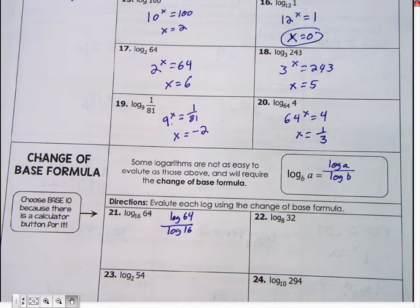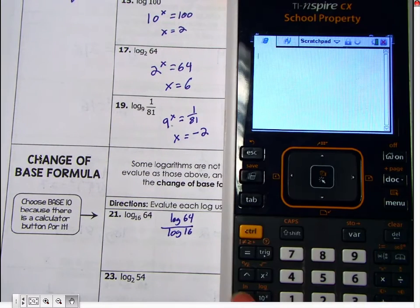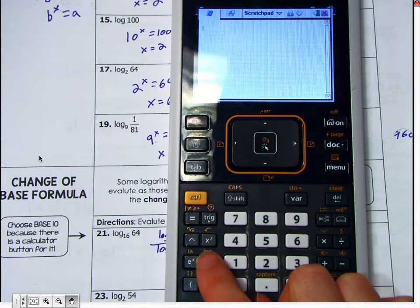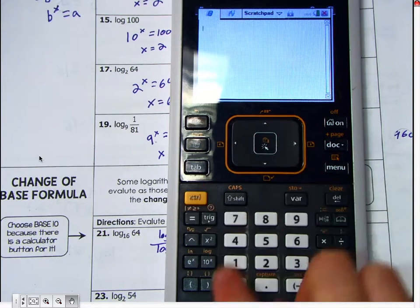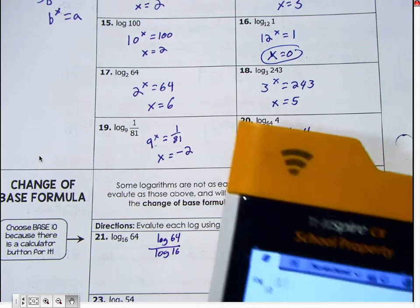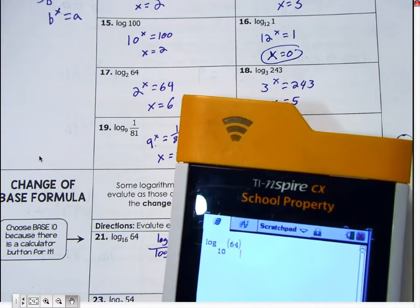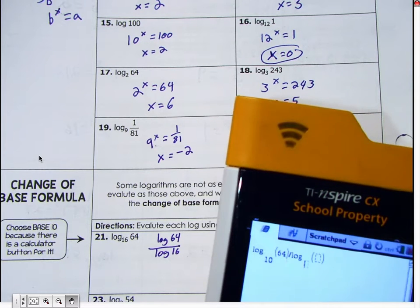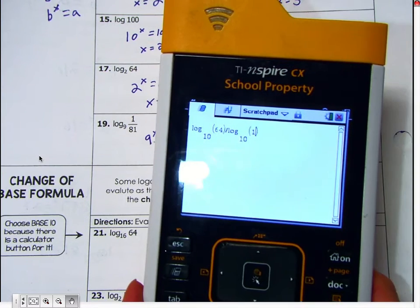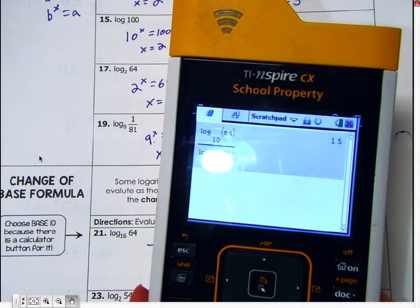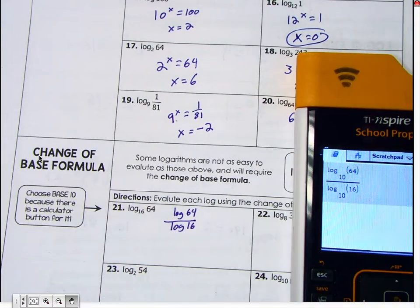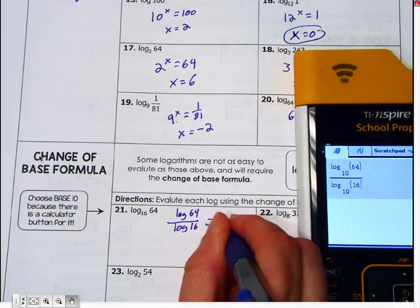All right. On your calculator, the log button is right here by the 1. You push the yellow button and that and it pops up. Now we're going to put log base 10. We're going to put 64 in there. We'll divide. Again, we put log base 10, 16, and we get just 1.5. So on your homework tonight, you won't have necessarily a calculator like this. You've just got to set it up like this and then we'll solve it in class.